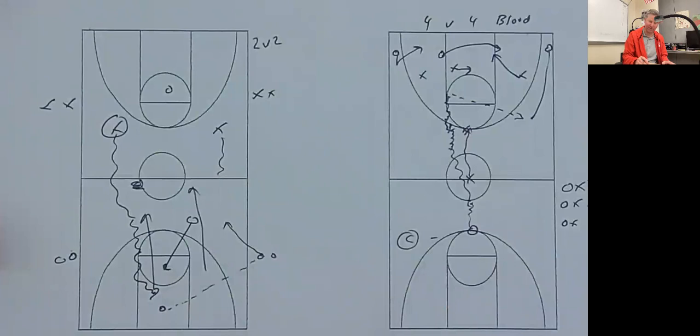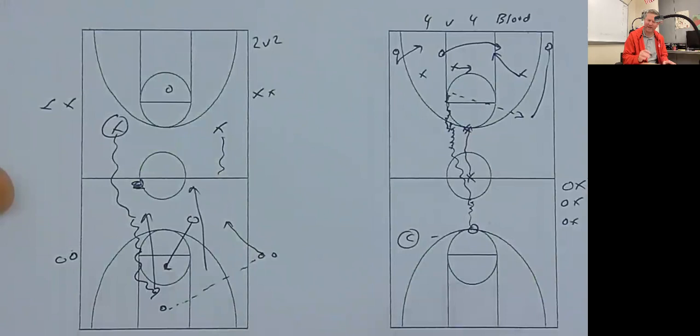A one-on-one, just go after each other kind of drill. Two-on-two, full-court transition. A continued right here in this diagram. And then four-on-four blood. And you'll find a ton of information online about the blood drills.